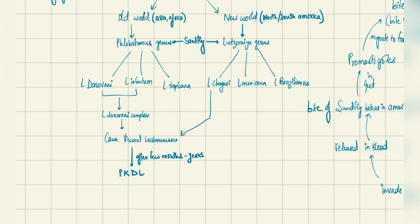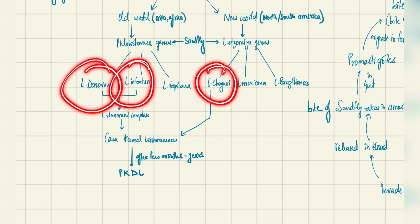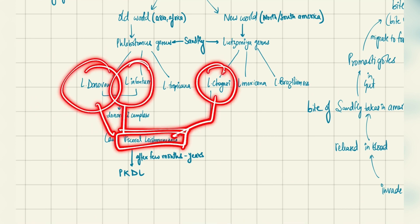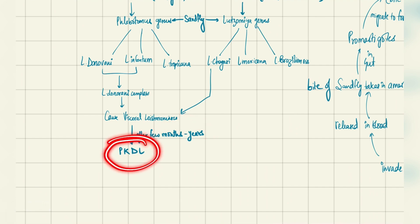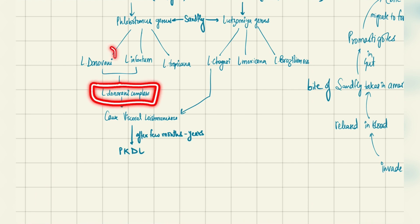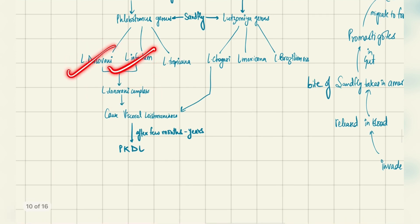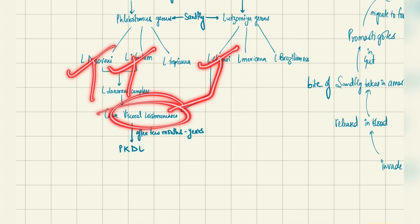The only important ones are Leishmania donovani, infantum, and chagasi, because these three together cause visceral leishmaniasis. Visceral leishmaniasis may progress after a few months or years to post Kala Azar dermal leishmaniasis. The Leishmania donovani complex is formed by Leishmania donovani and infantum. Remember: donovani, infantum, and chagasi — the three important ones causing visceral leishmaniasis.